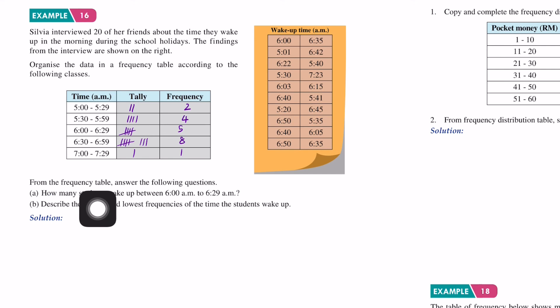From the frequency table, answer the following questions. How many students wake up between 6:00 to 6:29? From 6:00 to 6:29, we have 5 students. Part B: Describe the highest and lowest frequency of the time students wake up. The highest is 8, from 6:30 to 6:59. The lowest is 1, from 7:00 to 7:29.